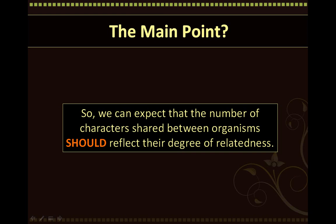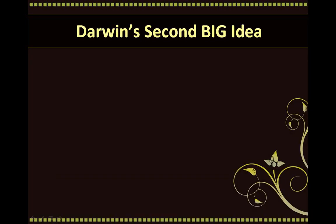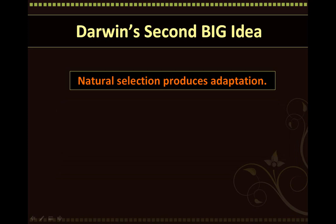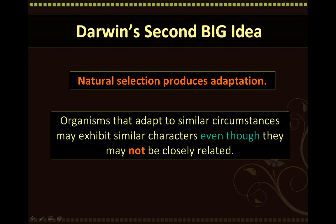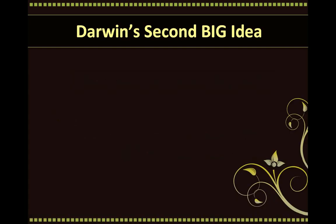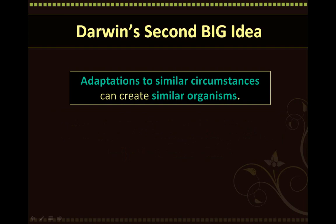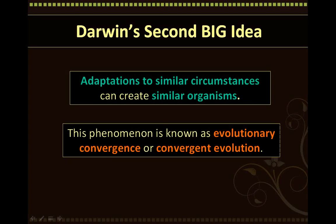However, this may not always be true, because of Darwin's second big idea. Darwin's second big idea was that natural selection produces adaptation. What this means is that organisms that adapt to similar circumstances may exhibit similar characters, even though they may not be closely related. Therefore, two unrelated organisms can resemble each other because they have been shaped in the same way by natural selection. Adaptations to similar circumstances can create similar organisms, and this idea is known as evolutionary convergence or convergent evolution.